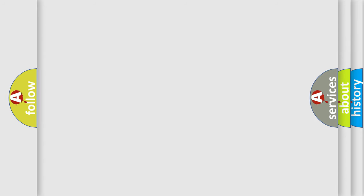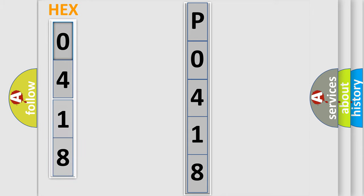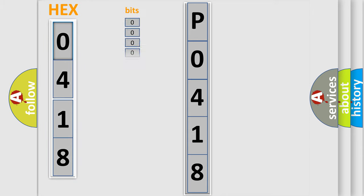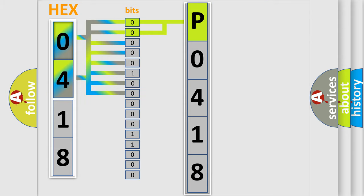The following demonstration will help you look into the world of software for car control units. The error code is split into two bytes consisting of 16 bits. One bit is the basic unit that each computer works with. The bit has two logical states: zero, low level, and one, high level. By combining the first two bits, the basic character of the error code is expressed. The next two bits again determine the second character.